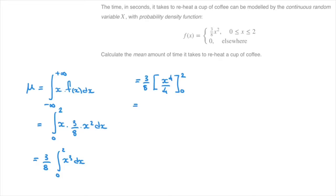So this would equal to three over eight times one over four times in square brackets x to the power of four with lower limit zero and upper limit two.